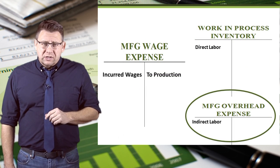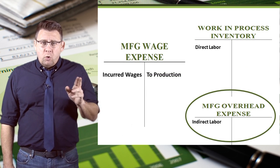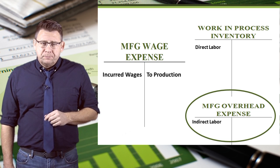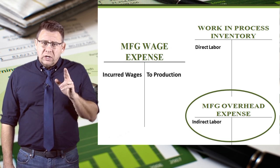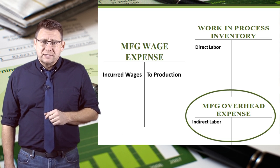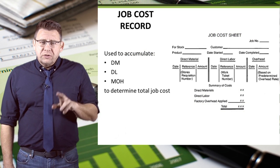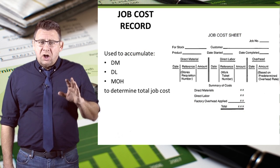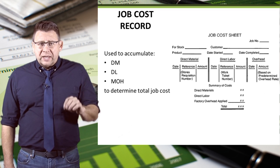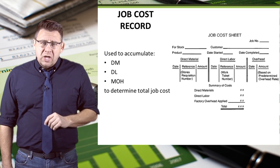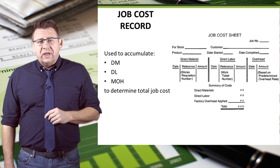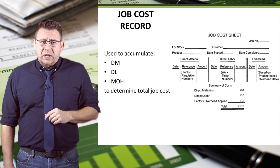Some of you probably noticed that moving indirect labor from one expense account to another didn't really move it to the balance sheet. Just be patient because we'll learn how manufacturing overhead gets moved to the balance sheet in an upcoming video podcast. The job cost record will contain all of the traced direct materials and direct labor for a particular job, and manufacturing overhead will be allocated to the job — we'll learn how to do that in the same upcoming video podcast.